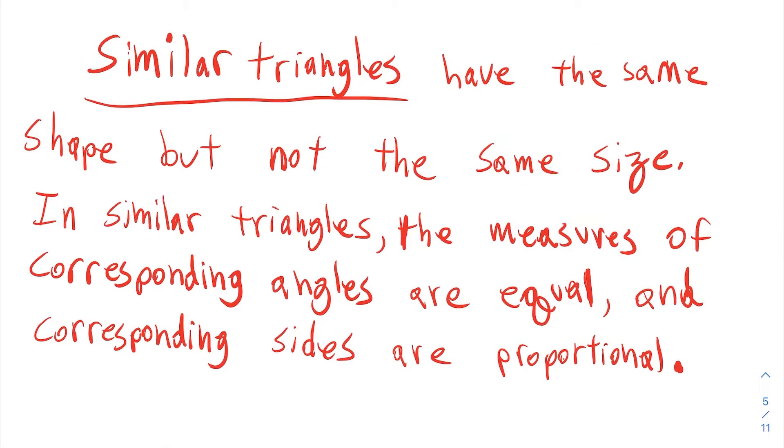Alright, so let's talk about similar triangles. This is another application of proportions. Similar triangles have the same shape, but not necessarily the same size. In similar triangles, the measures of corresponding angles are all equal, but corresponding sides are just proportional to each other.